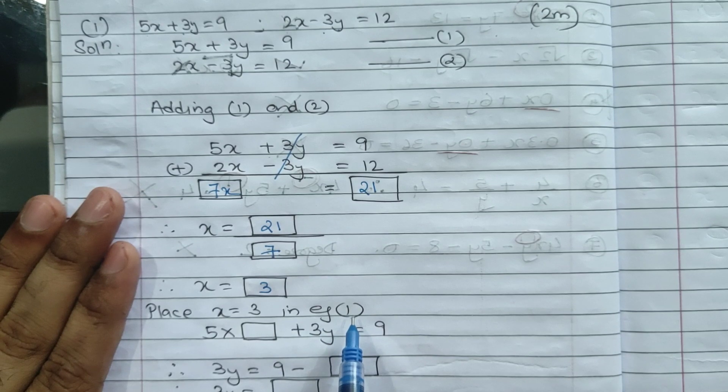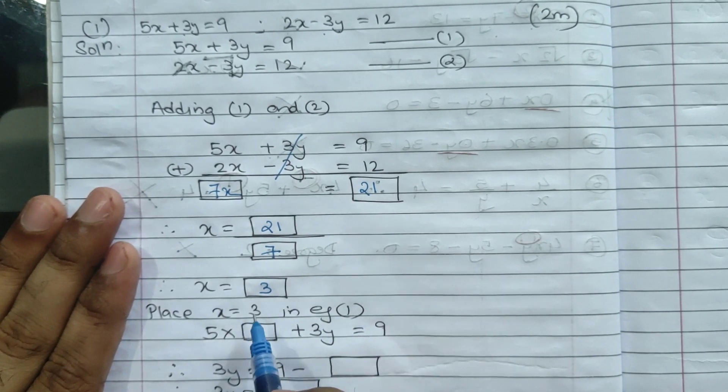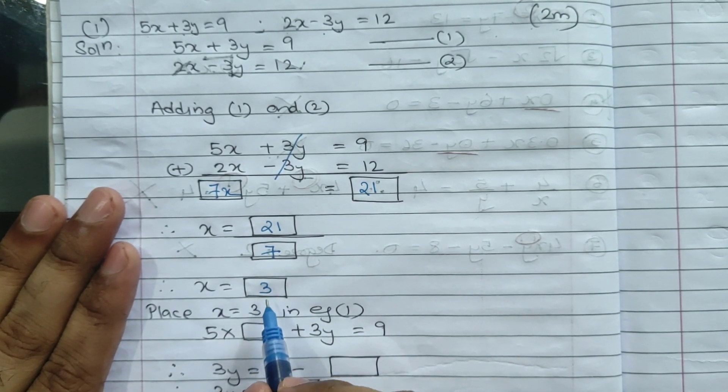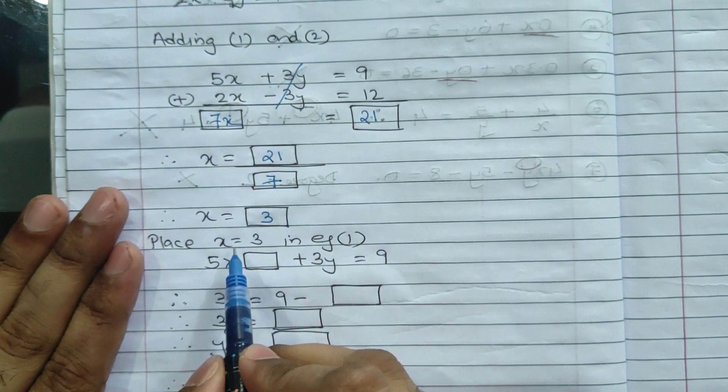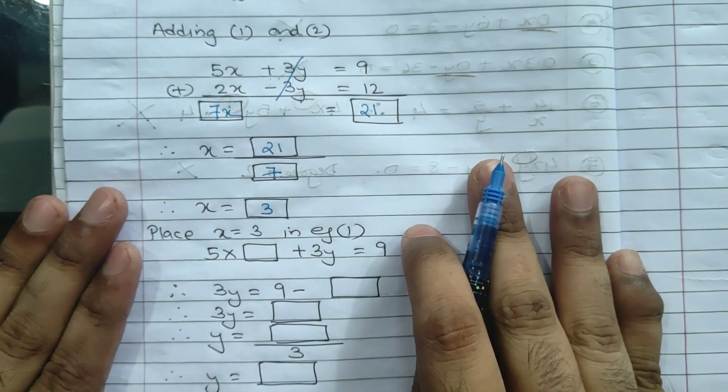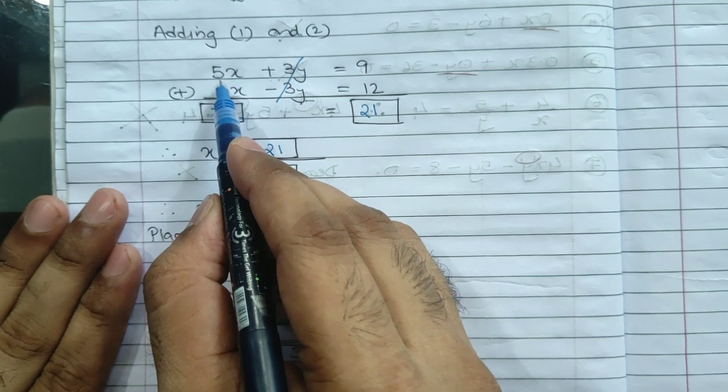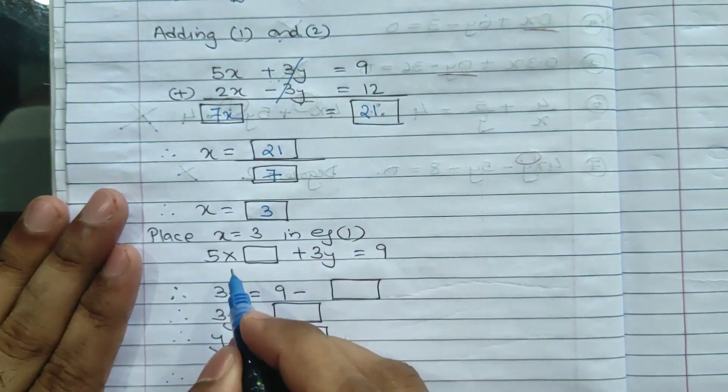Place x equal to 3 in equation 1. So placing x or substituting x in equation number 1, equation 1 was 5x plus 3y equals 9.